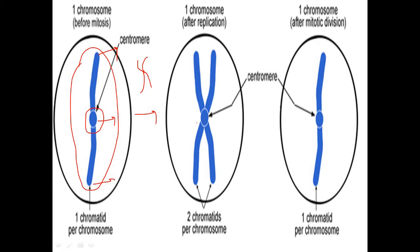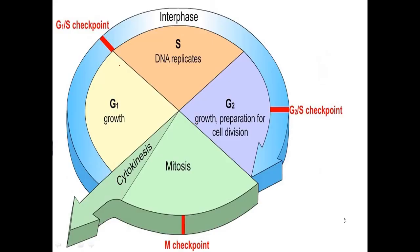Before describing how chromosome number changes during mitosis, let us discuss the cell cycle. The cell cycle contains four different phases: G1, S, G2, and mitosis. In G1 phase, the cell attains its maximum size and prepares for the next phases. In S phase, the DNA is replicated — the number of chromosomes remains the same, but the amount of DNA is doubled and the number of chromatids is also doubled.